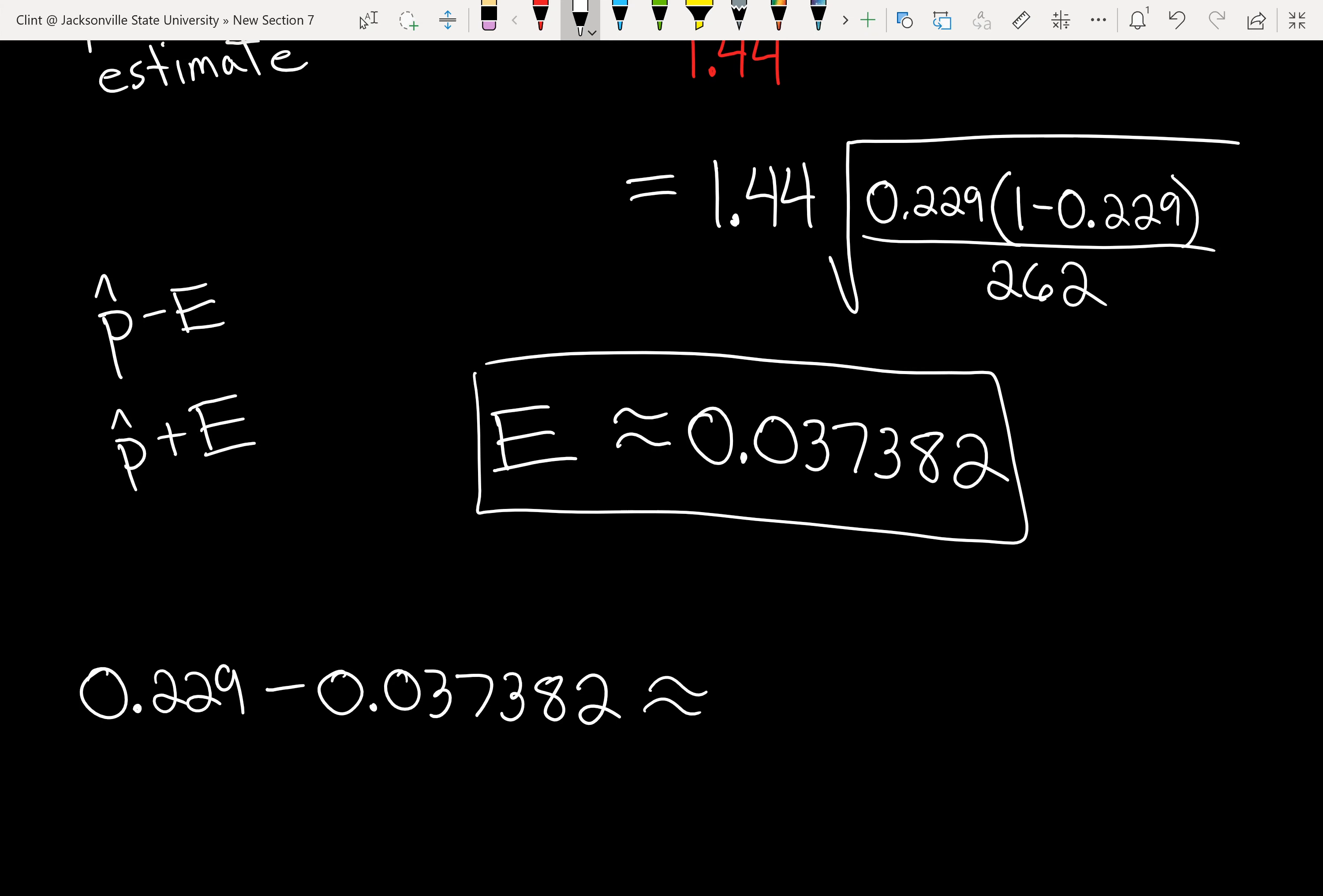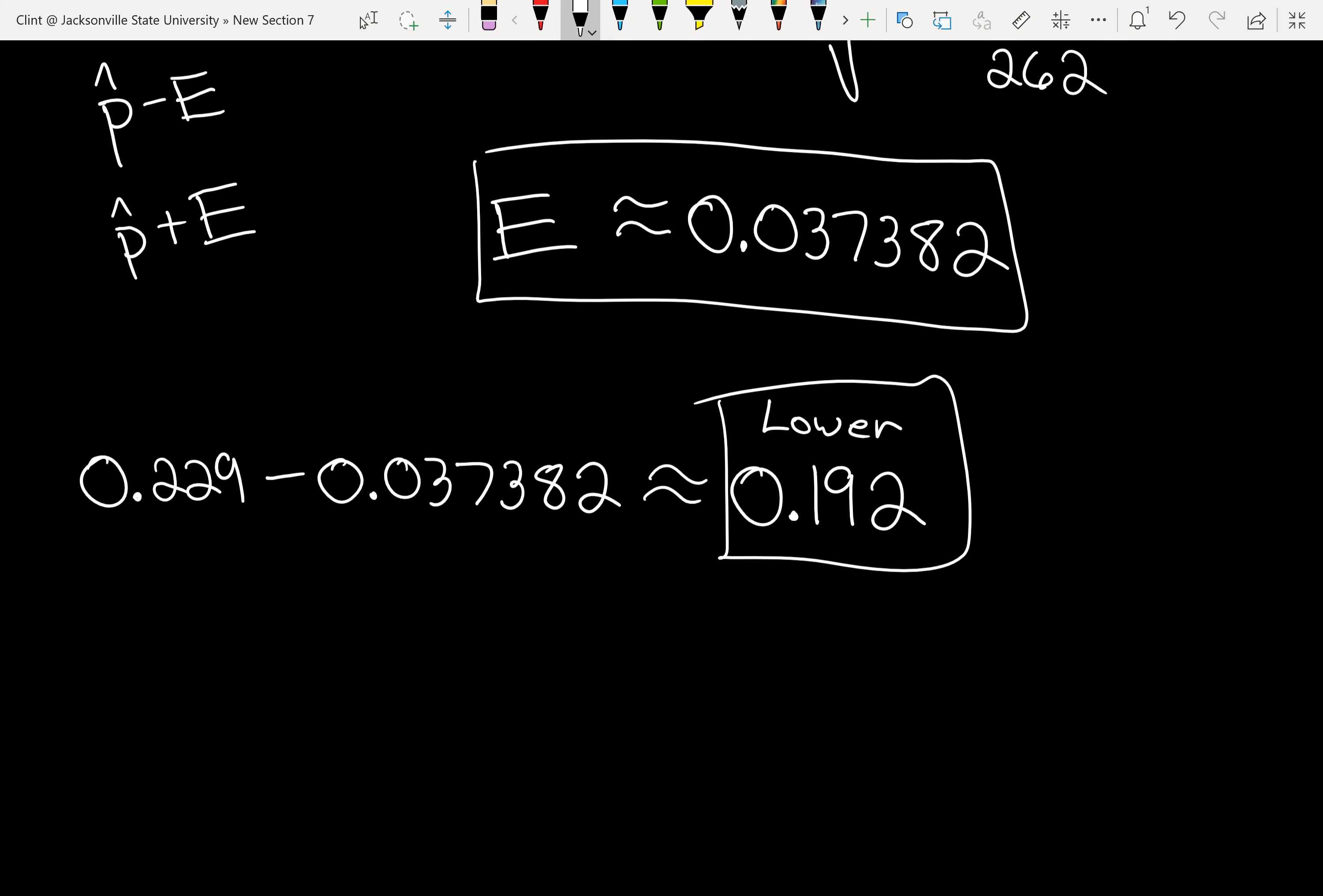So 0.229 minus 0.037382. And when we round, I get here 0.19 and it rounds up to two. So that's the lower endpoint.